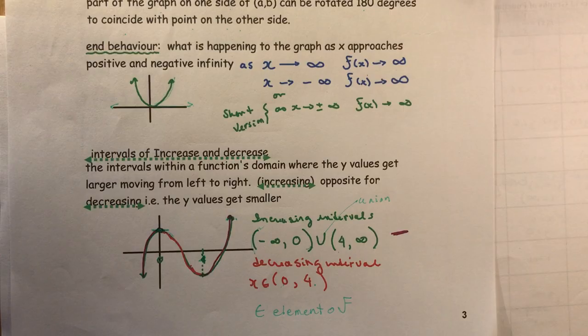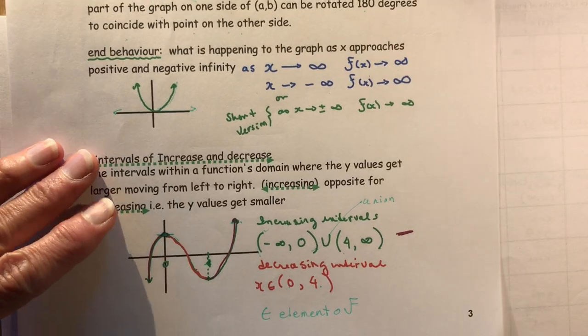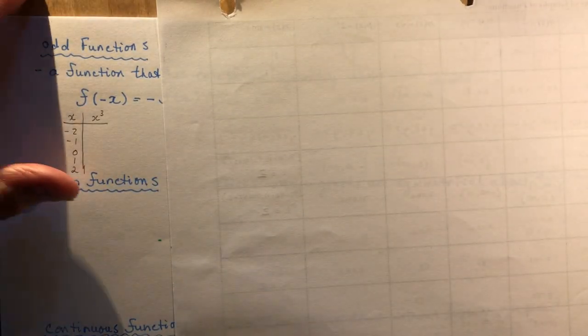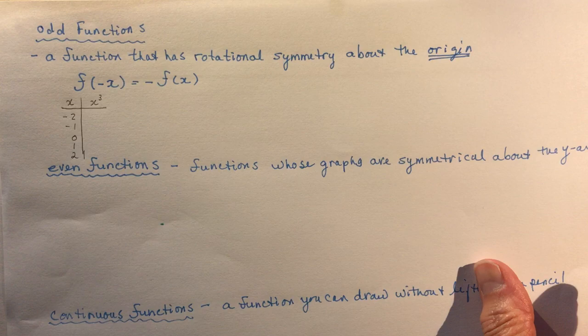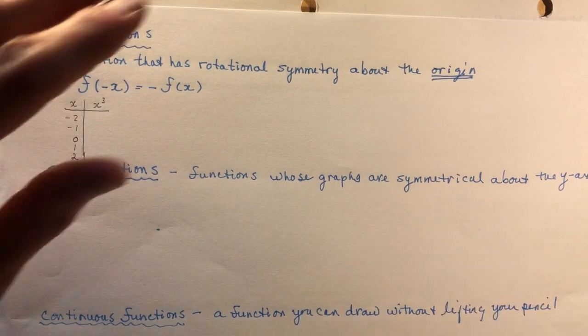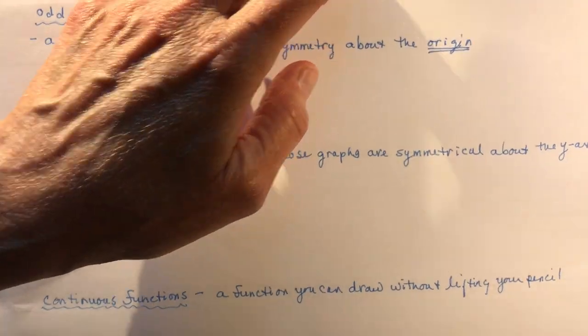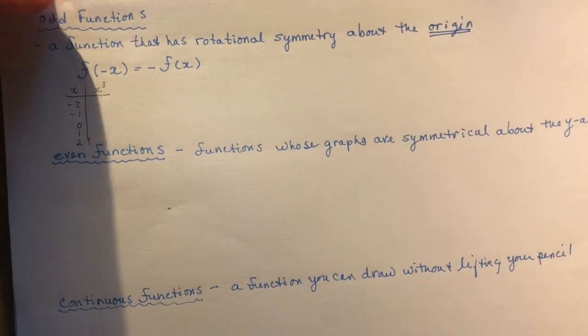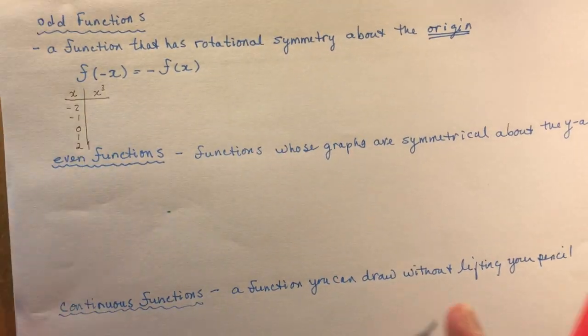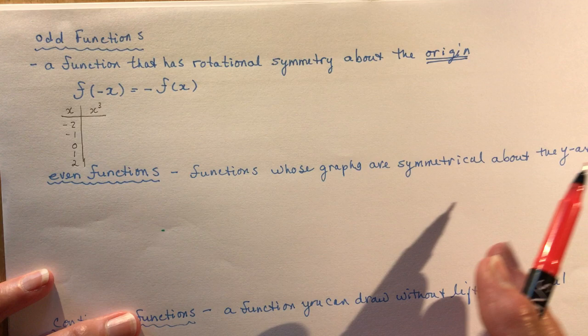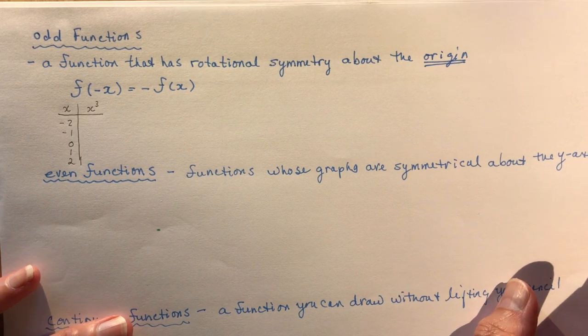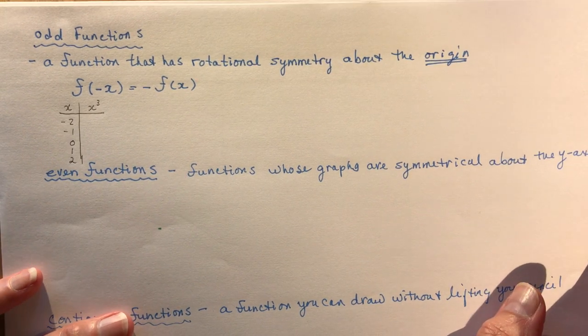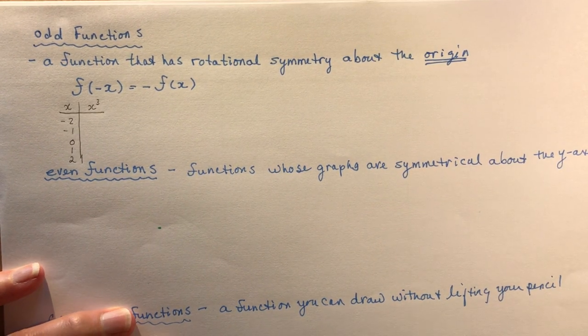Now let's look at odd functions. We finished the properties of intervals, and now we're going to look at odd functions. An odd function is a function that has rotational symmetry about the origin.